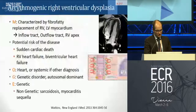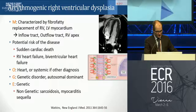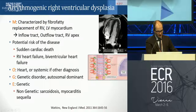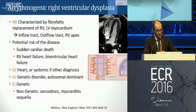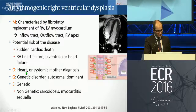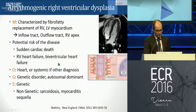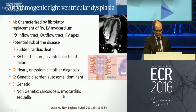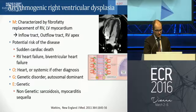Arrhythmogenic right ventricular dysplasia is a disease characterized by fibro-fatty replacement of the RV and also LV wall, predominantly involving the inflow tract, outflow tract, and RV apex. This is a potential risk for sudden cardiac death and also RV heart failure. The involvement is mainly cardiac, but if the origin is non-genetic, it could be systemic. Sarcoid disease and myocarditis can also give exactly the same phenotype as ARVD.